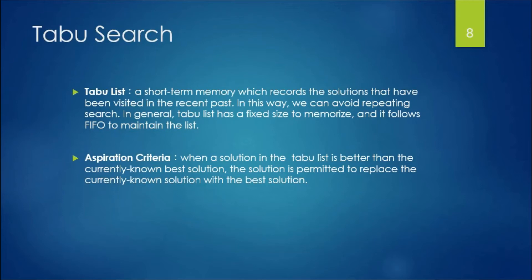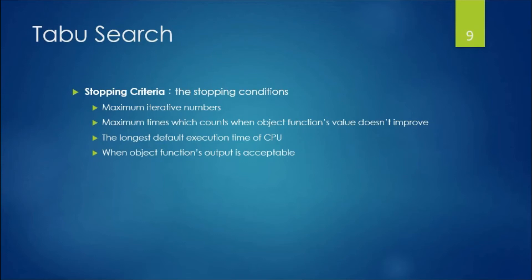Normally a solution from the Tabu List is not considered while searching neighborhood solutions. But if we apply the aspiration criteria and a better solution is found in the Tabu List, the current solution is replaced with it. Stopping conditions include: the maximum number of iterations, or the maximum count of iterations where the objective function value doesn't improve.